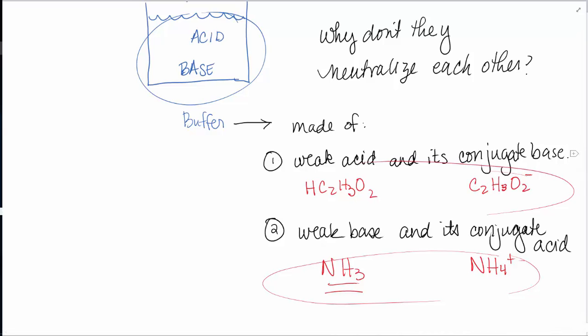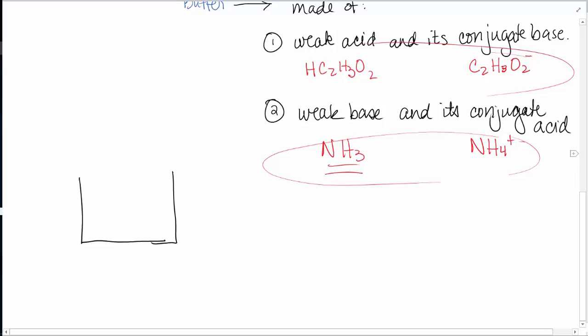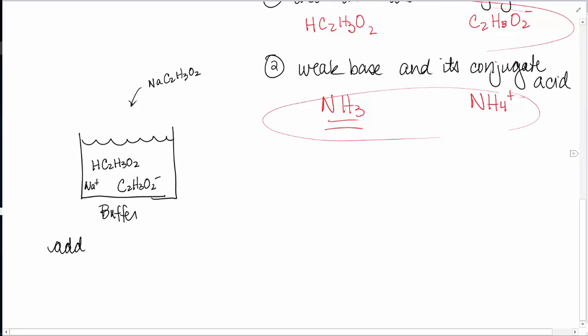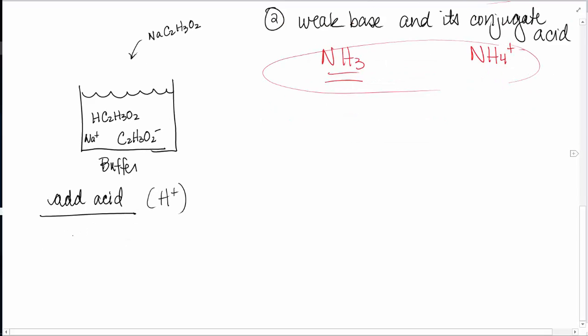So let me just show you kind of quickly how that works. So let's say that I made a buffer that has acetic acid, HC2H3O2. And maybe I put in some sodium acetate, which is going to dissolve and break apart. So I have C2H3O2 minus, and then there's some sodiums in there. That's just a spectator ion, I don't care about that. But notice I have both of those things. So if this is my buffer, and it's got both of those in there, let's say if I add an acid, I'm adding something that's contributing H+. If I add an acid, it's going to react with the base part of the buffer.